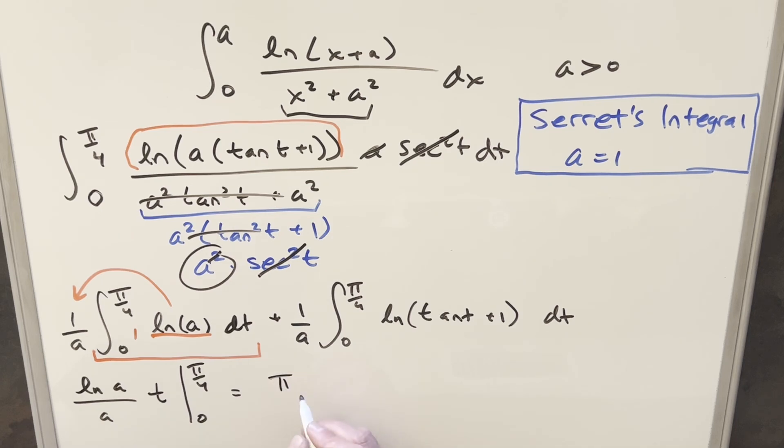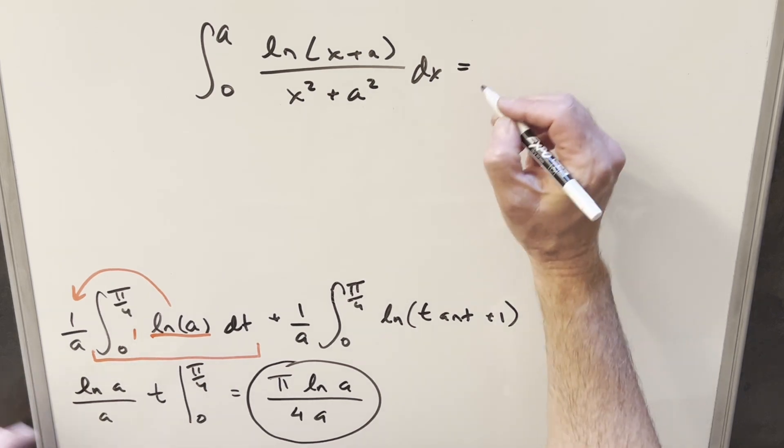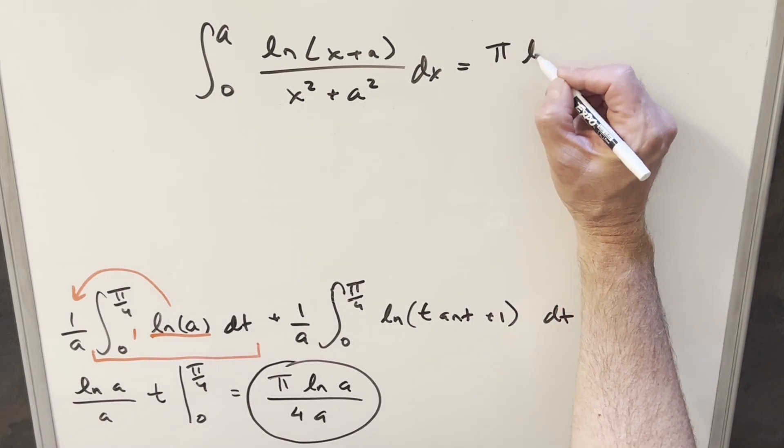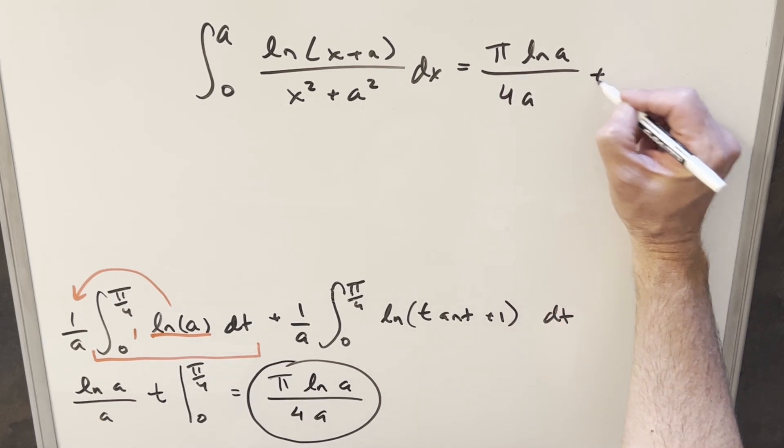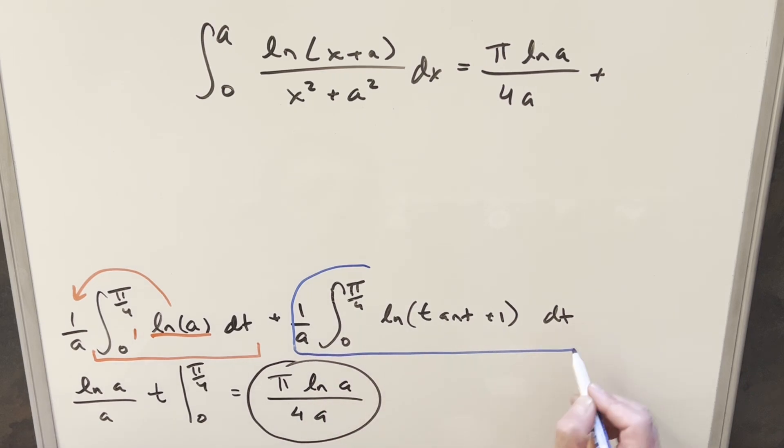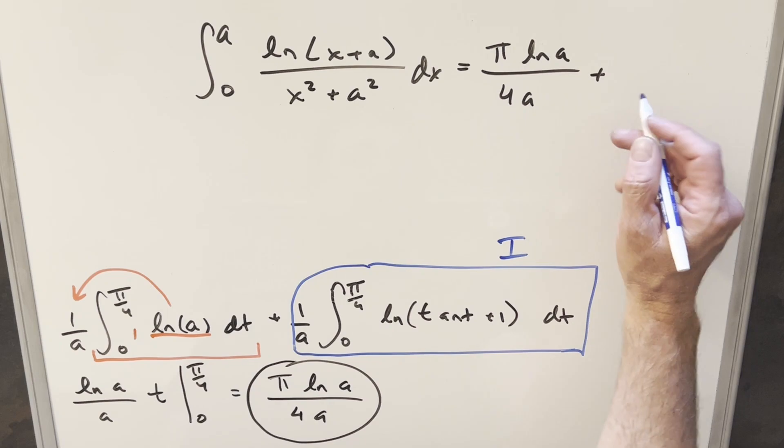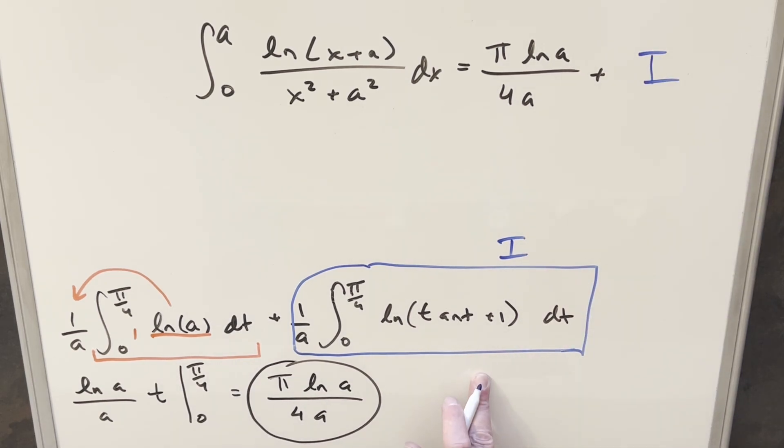Putting this together, this piece of the integral is going to be pi natural log A over 4A. Let's make a note of this piece here and get this out of the way. Going back to our original integral, we have this part, we're going to say at least it's going to be pi natural log of A over 4A plus this piece right here. Let's put a label on this integral so we can keep track of it. For this right here, let's call this thing big I. So we're saying our integral is going to be equal to this plus whatever big I is. But now we need to work this out on the next board.